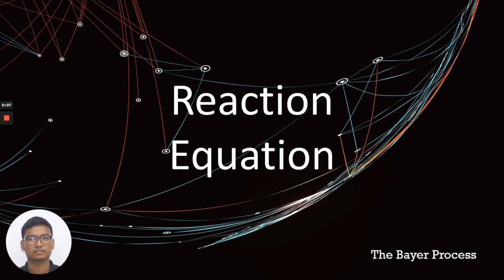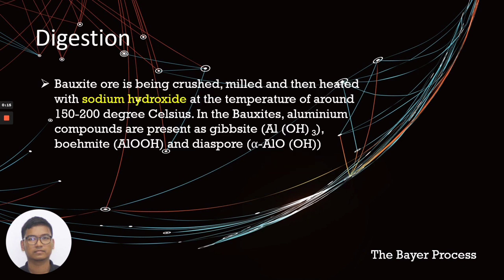I will talk about the reaction equation of the Bayer process. There are a few steps that need to be done. The first step is digestion. Bauxite ore is crushed, milled, and then heated with sodium hydroxide at a temperature of around 150 to 200 degrees Celsius. In bauxite, aluminum compounds are present as gibbsite, bohemite, and diaspore.